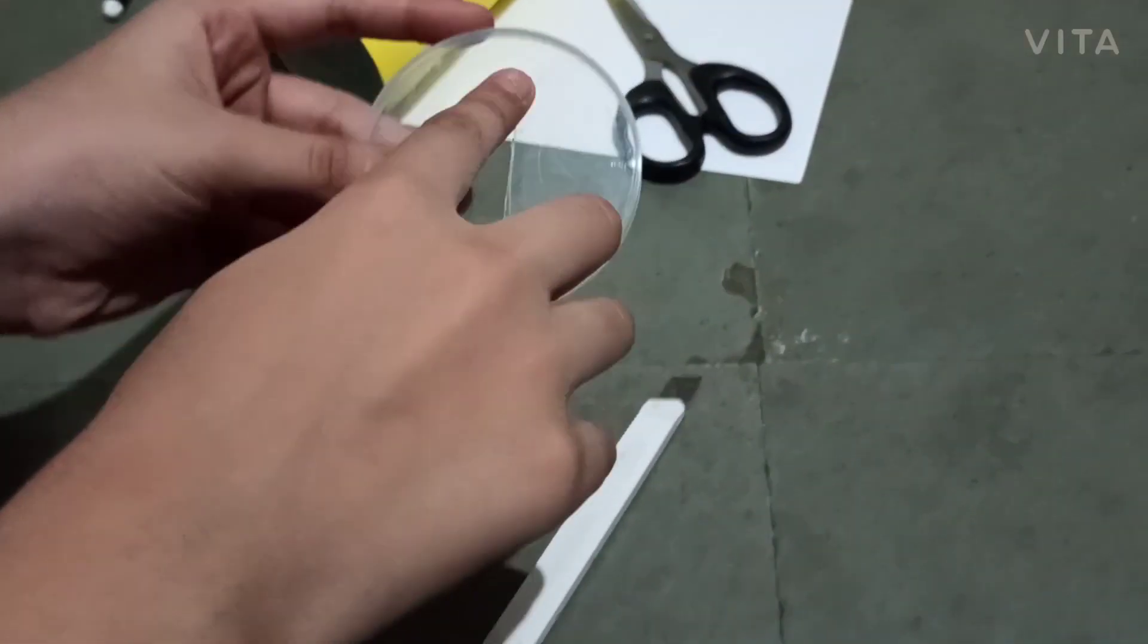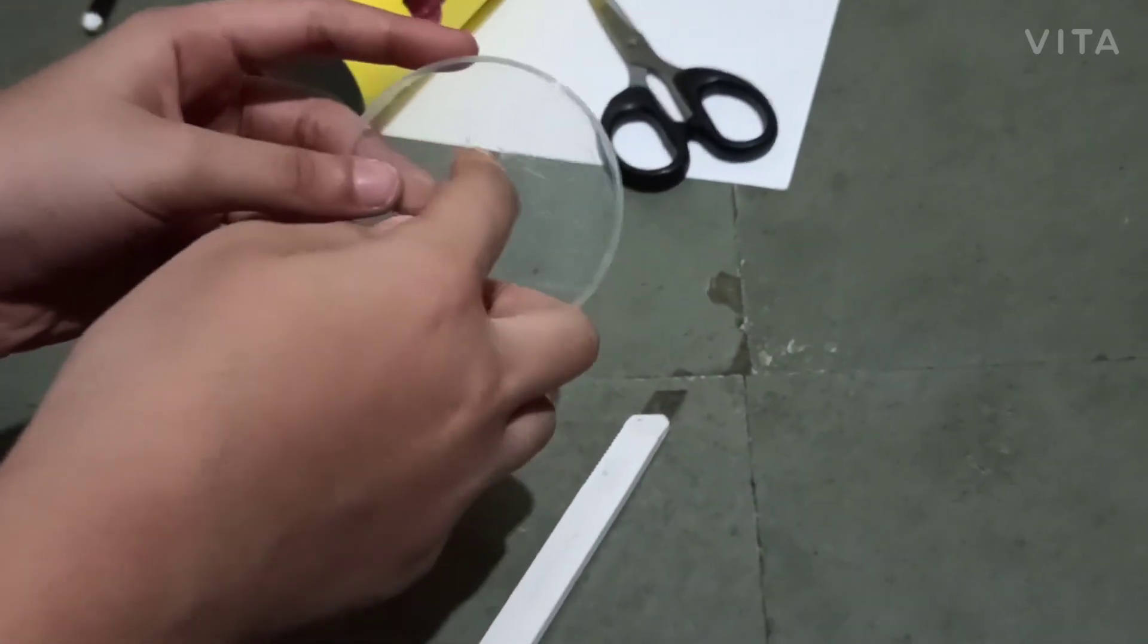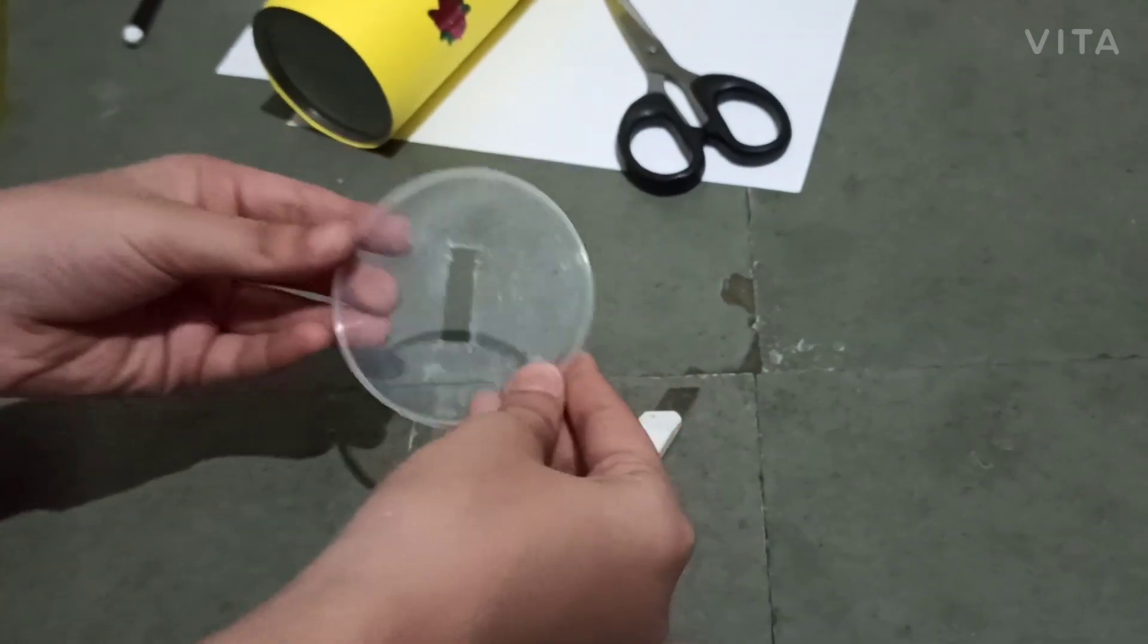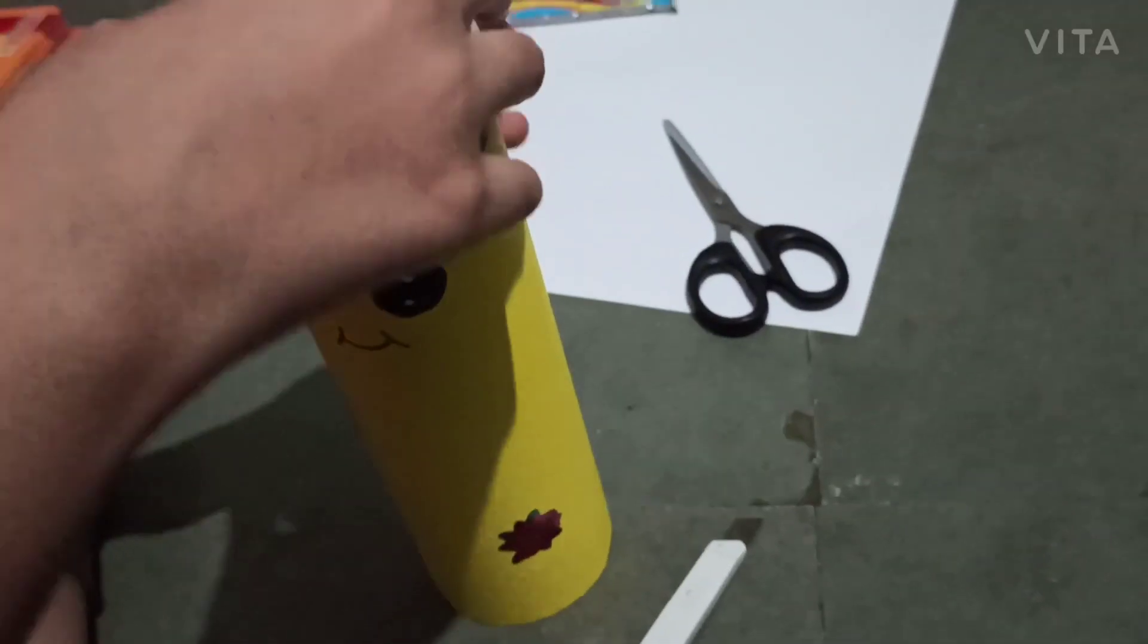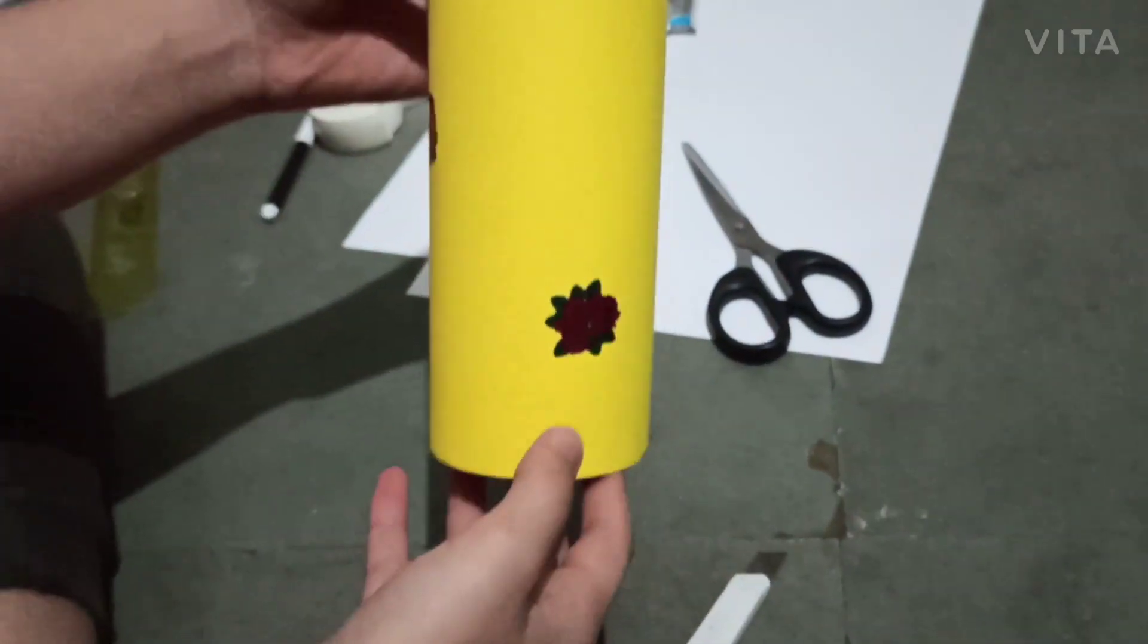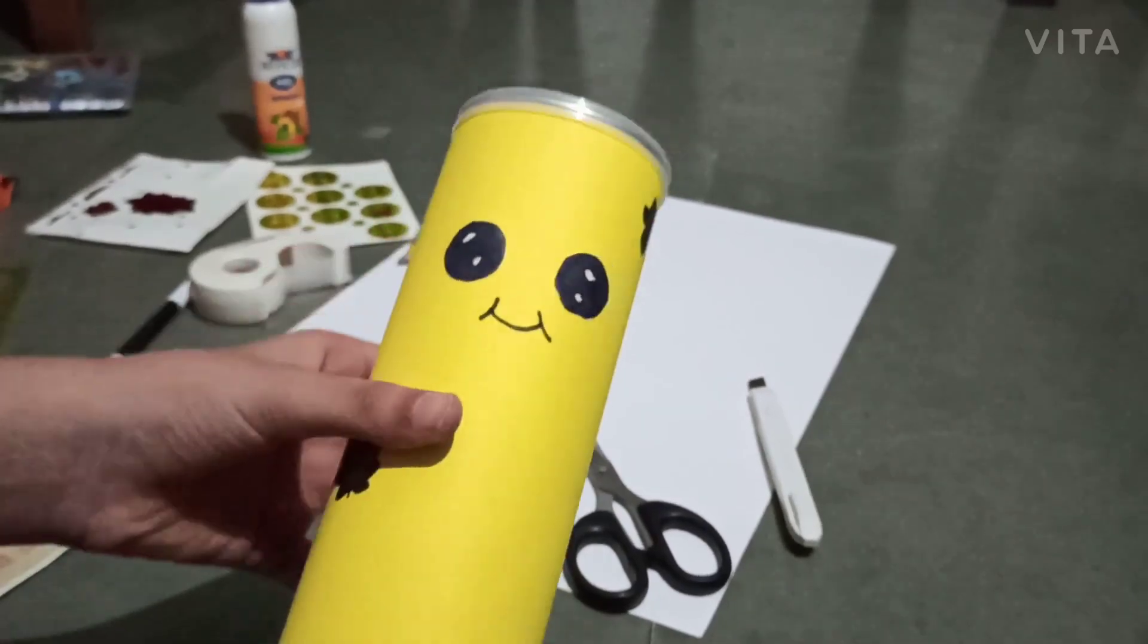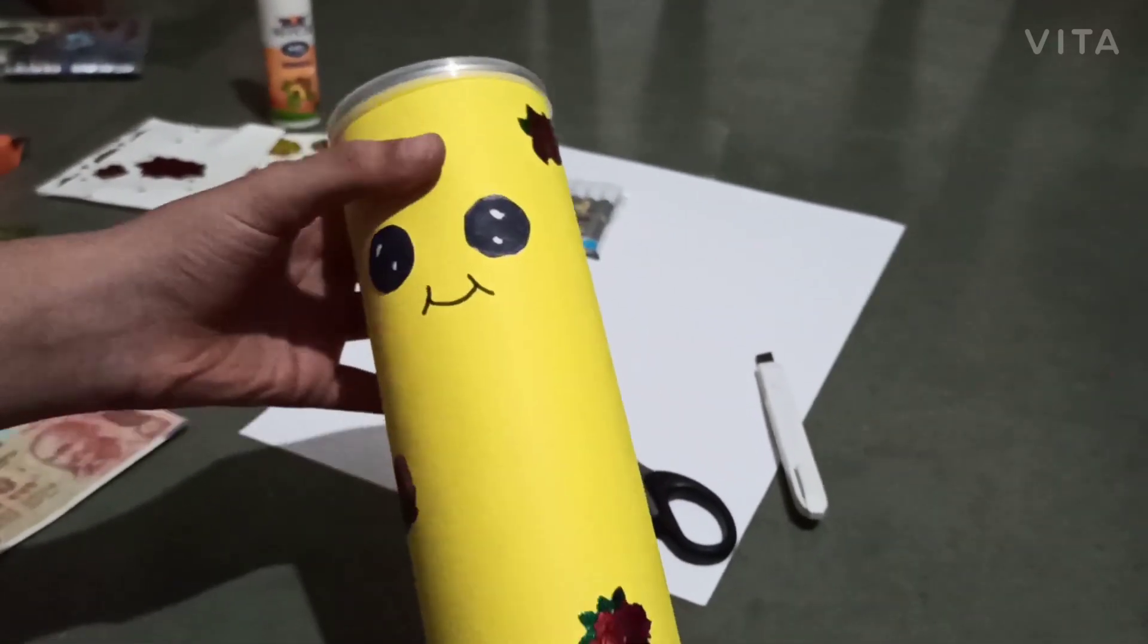Now I am going to cut the circles, not circles but this part on which we are going to put the rupees. So now we are going to cut this and our piggy bank is ready. Now our piggy bank is done.